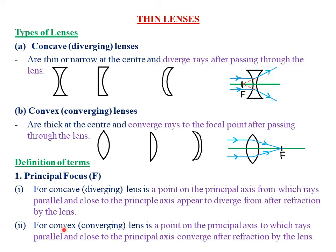We can also define the principal focus for the case of a convex or converging lens. All rays which are close and parallel to the principal axis appear to be focused or converge at point F. Therefore, for the case of a convex or converging lens, the principal focus is defined as a point on the principal axis to which rays parallel and close to the principal axis converge after refraction by the lens.